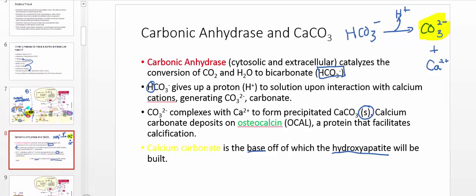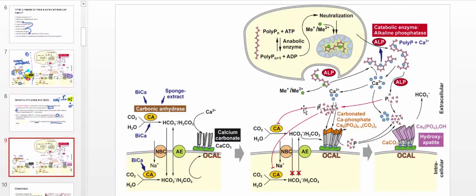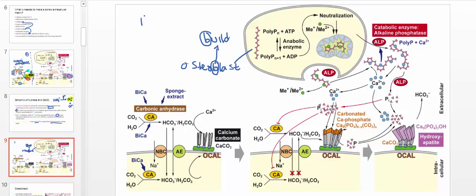In general, what's going to happen is we're going to require a cell called an osteoblast. The way people typically remember osteoblast is they look at the 'B' — osteoBblast — and say it must build the bone. Osteoblasts build the bone in two ways: number one, they synthesize collagen, which won't be dealt with much in this video; and number two, they synthesize the hydroxyapatite. We're going to talk about how they do that.